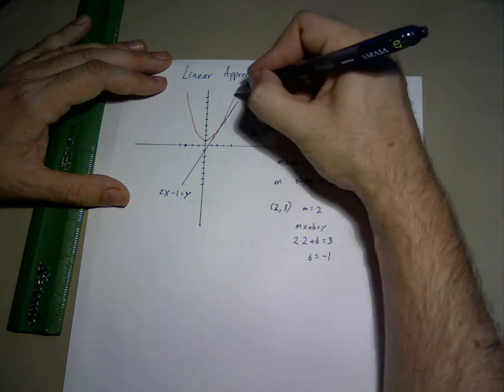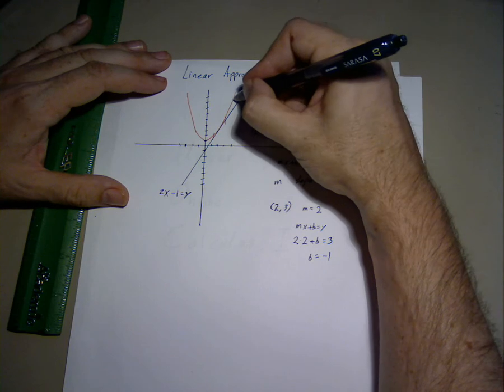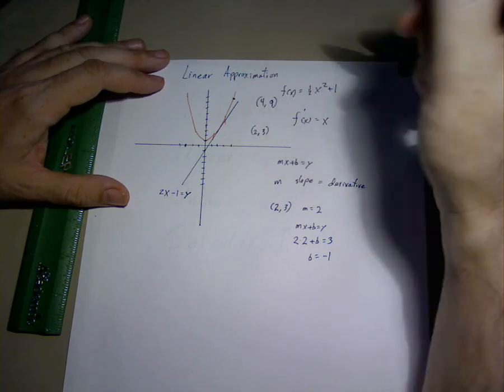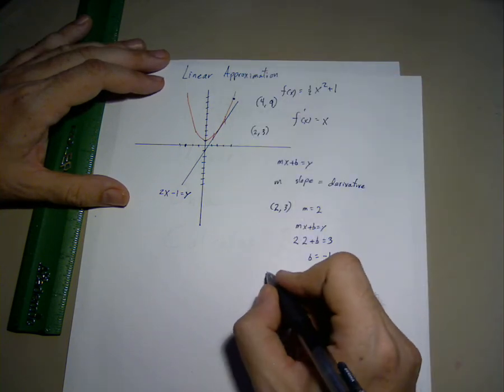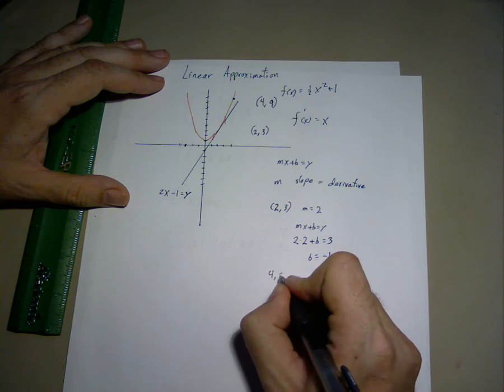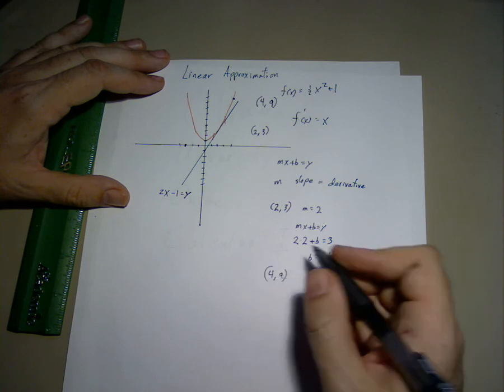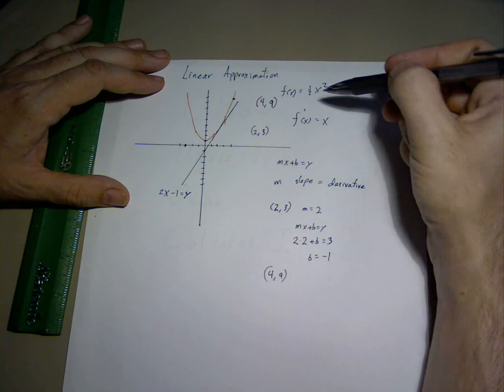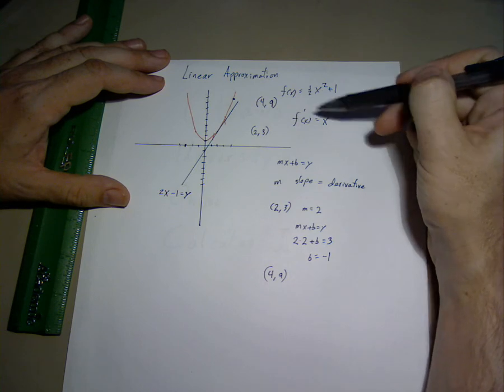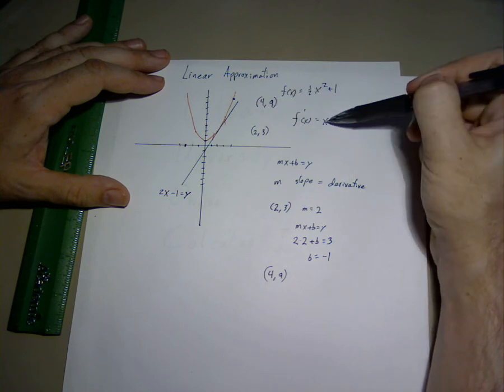Likewise, with this next point right here, we start with the point (4,9). The slope at this point is x equals 4. The slope is 4.